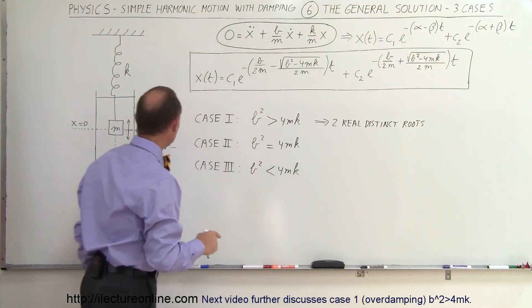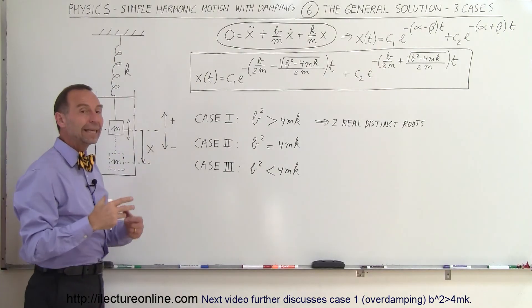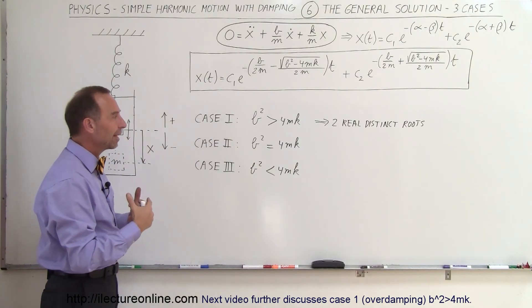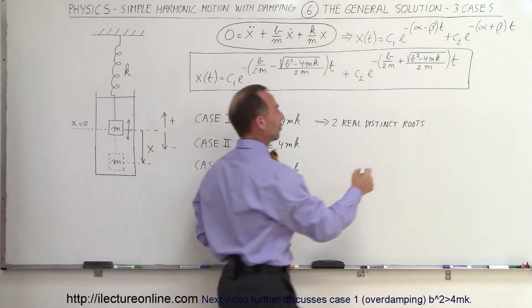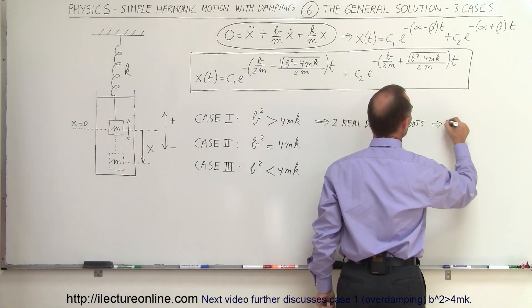That would be the case where B is very large, representing an overdamping of the system. So this would result in what we would call overdamping.